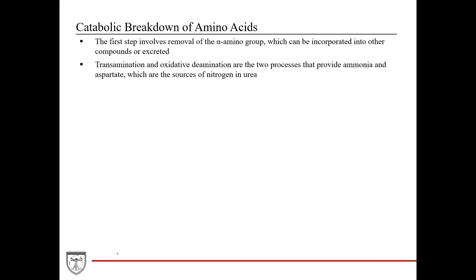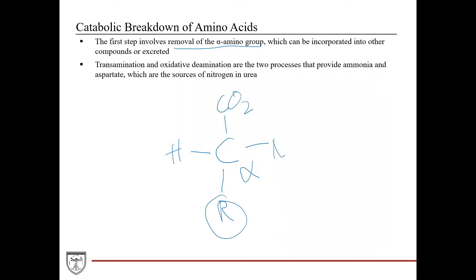The catabolic breakdown of amino acids begins with the removal of the alpha amino group. In the amino acid structure, the alpha carbon is bonded to a hydrogen, the R group (unique to each amino acid), a carboxyl group, and the amino group. Removing that alpha amino group allows it to be incorporated into other compounds or excreted. The two processes that carry this out are transamination and oxidative deamination, which together provide ammonia and aspartate as the sources of nitrogen for urea synthesis.